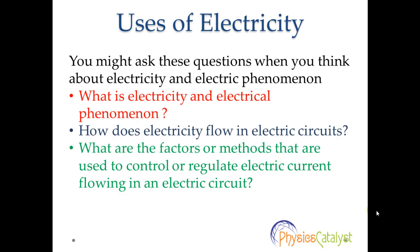This whole chapter on electricity is about giving you a basic idea about electricity and electrical phenomena — what is electricity and how does it flow in an electric circuit? Apart from these questions, you might also ask about the factors or methods that can be used to control or regulate electric current flowing through an electric circuit.